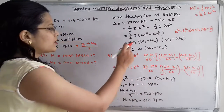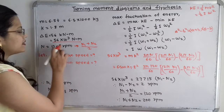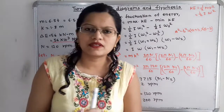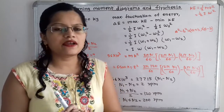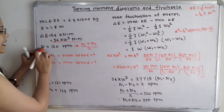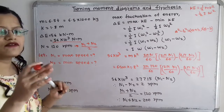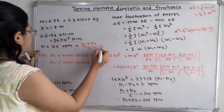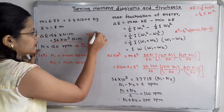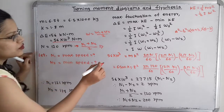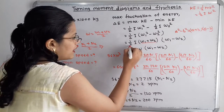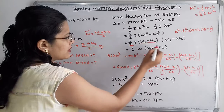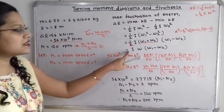We know that mean speed N equals N1 plus N2 divided by 2. The mean angular velocity omega is calculated as 2 pi N by 60, and in the same way omega equals omega 1 plus omega 2 divided by 2. So we substitute omega 1 plus omega 2 with 2 omega, simplifying the formula to: delta E equals I times omega times (omega 1 minus omega 2). This is the simple form of the formula — instead of remembering complicated formulas, we derive it from basic principles.